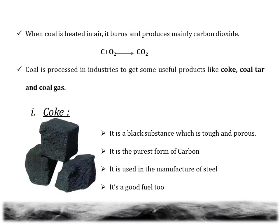Now let's see what happens when coal is heated. When coal is heated in air it burns and produces carbon dioxide. When coal is heated in the absence of air it forms a number of products — that process is called as destructive distillation. Some of these products are coke, coal tar and coal gas. The first one is coke. It is a black substance which is tough and porous. The substance left after heating powdered coal in the distillation process is known as coke. It is the purest form of carbon, containing 98% carbon. It is used in the manufacture of steel and it is a good fuel too.